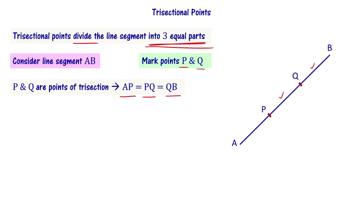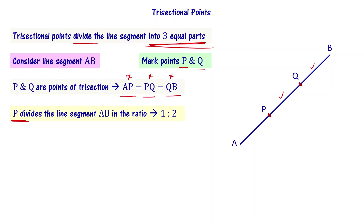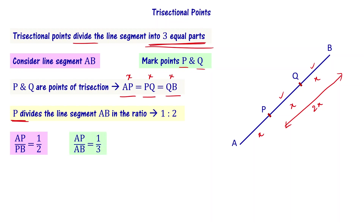P and Q are trisectional points when AP is equal to PQ equal to QB. Each part can be x units. Now, looking at the figure, P divides the line segment AB in the ratio 1 is to 2, since AP equals x and PB equals 2x. So AP by PB equals 1 by 2, or equivalently AP by AB equals 1 by 3.